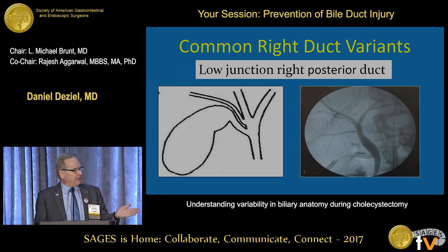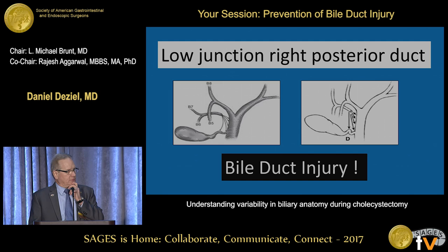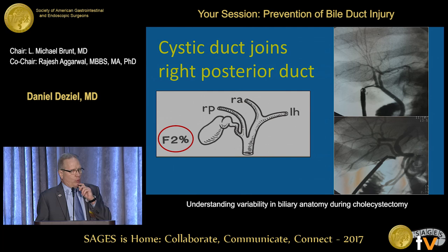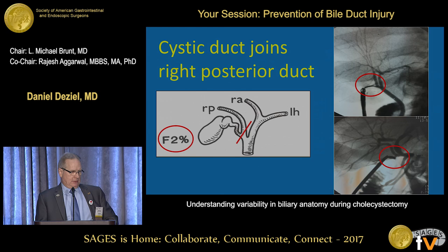A low inserting right hepatic duct can also be very close to the gallbladder, and here is a relatively dramatic example. A low posterior duct is vulnerable to injury. Two percent of the time — one out of 50 cholecystectomies — the cystic duct will actually come from a separate right posterior duct. Here are some cholangiographic examples of that, and if this variation is not recognized, injury is an imminent risk.